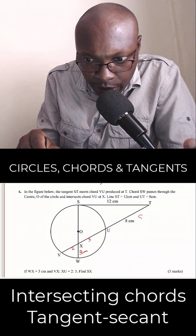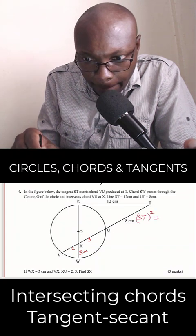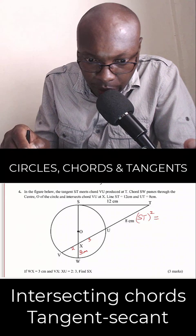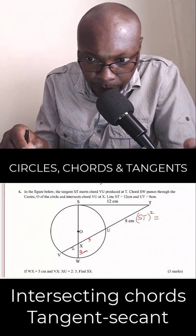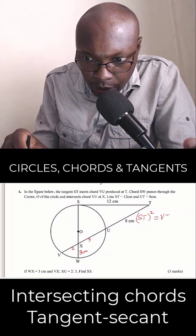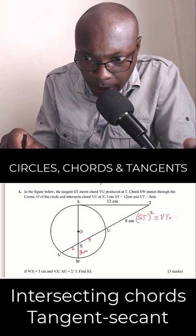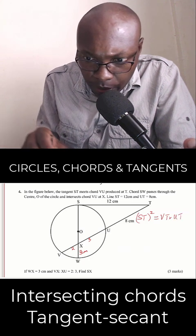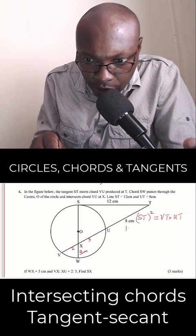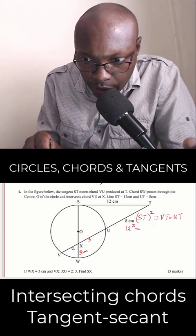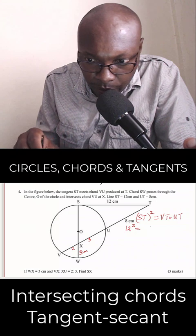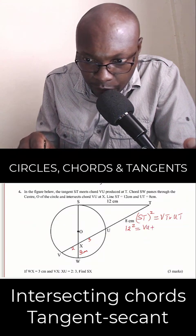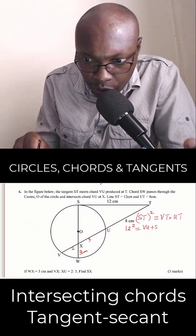So the property that connects tangent and secant, ST squared is given by VT multiplied by UT. So substituting this, ST squared is 12 squared equals VT. VT will be given by VU plus UT, and UT is 8.